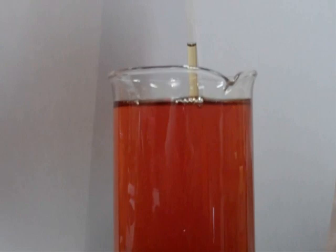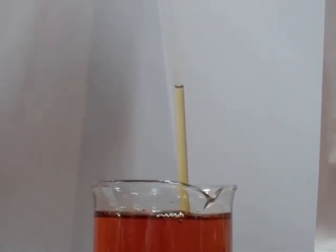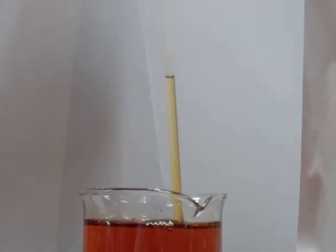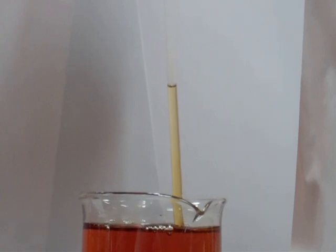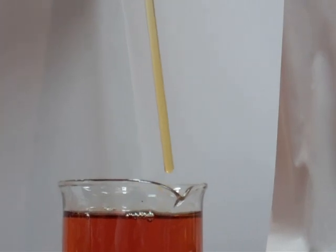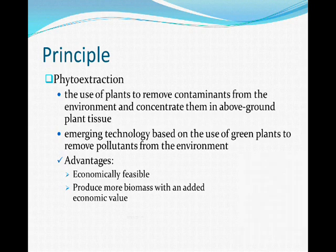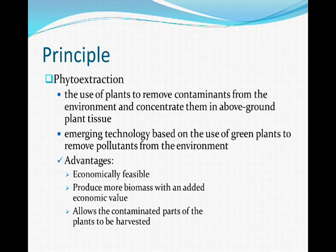Phytoextraction is the use of plants to remove contaminants from the environment and concentrate them in above-ground plant tissue. Besides conventional site decontamination techniques, phytoextraction is an in-situ emerging technology based on the use of green plants to remove pollutants. It is economically feasible, produces more biomass with added economic value, and allows contaminated parts of the plant to be harvested and disposed of correctly while remediating the contaminated soil.